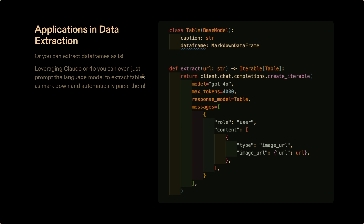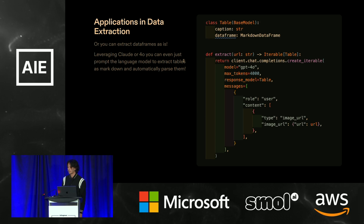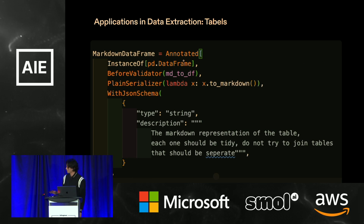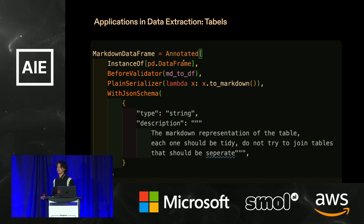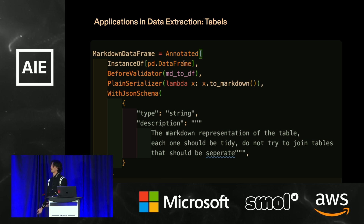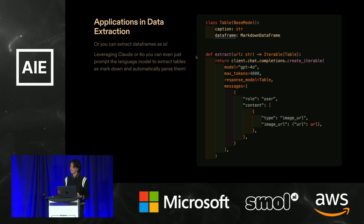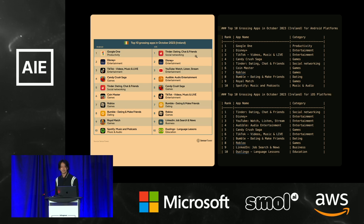You can do some really magical stuff. In this example, the type is called Table — it has a caption string and a markdown DataFrame type hint. What we're doing is extracting tables out of an image using new Python annotation capabilities to create new type hints. This type hint says it's an instance of DataFrame, so your IDE will autocomplete all DataFrame methods. The before-evaluator says: I know markdown is coming out, but parse it to a DataFrame. The serializer says: I know it's a DataFrame, but when I serialize it, make it markdown. You can add JSON schema information that becomes the prompt sent to the language model. Because of the DataFrame type, you can instantly call to_csv without worrying about other implementation details.